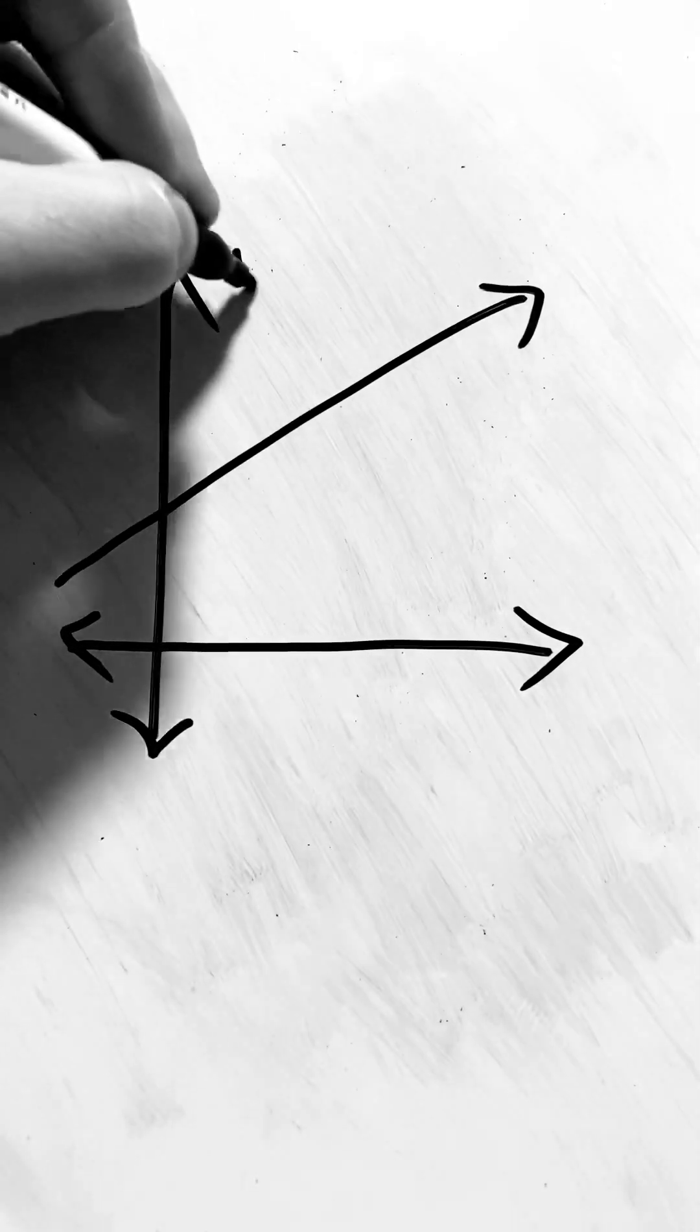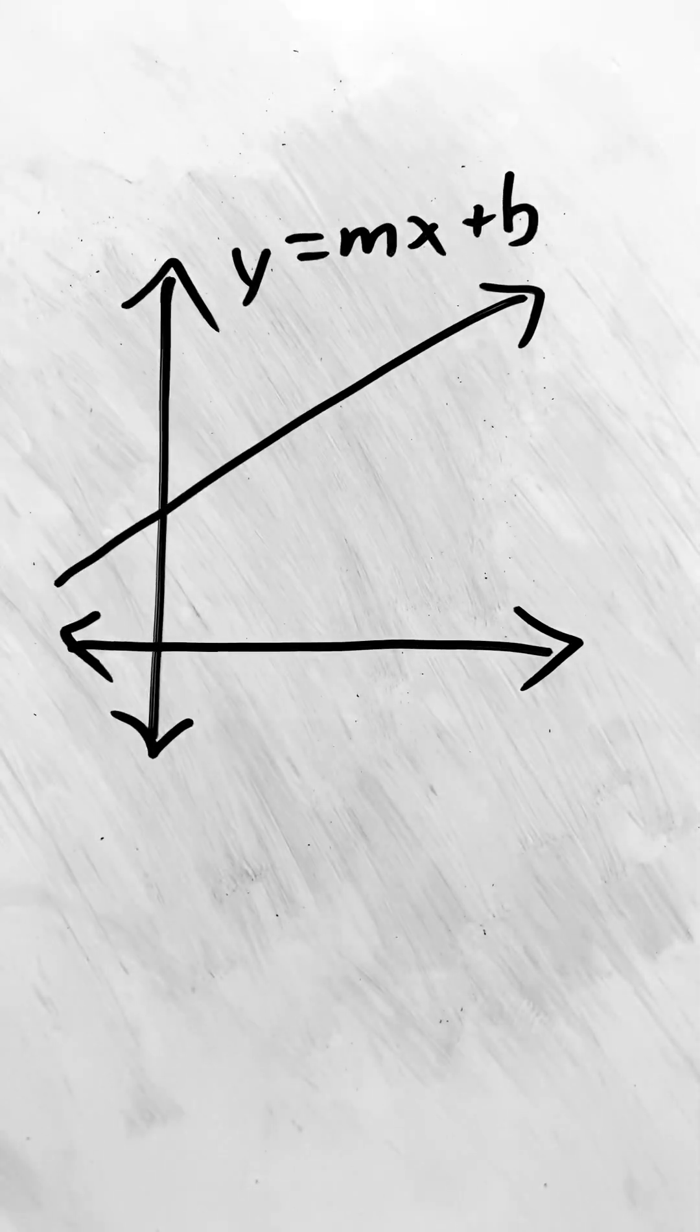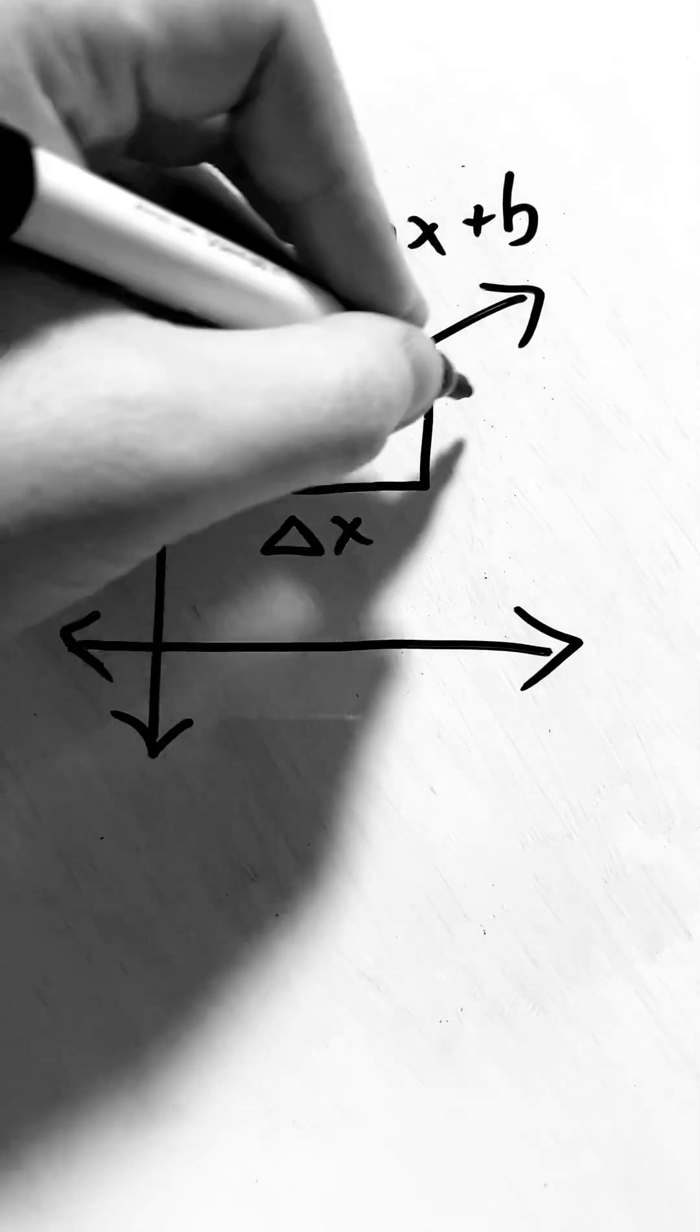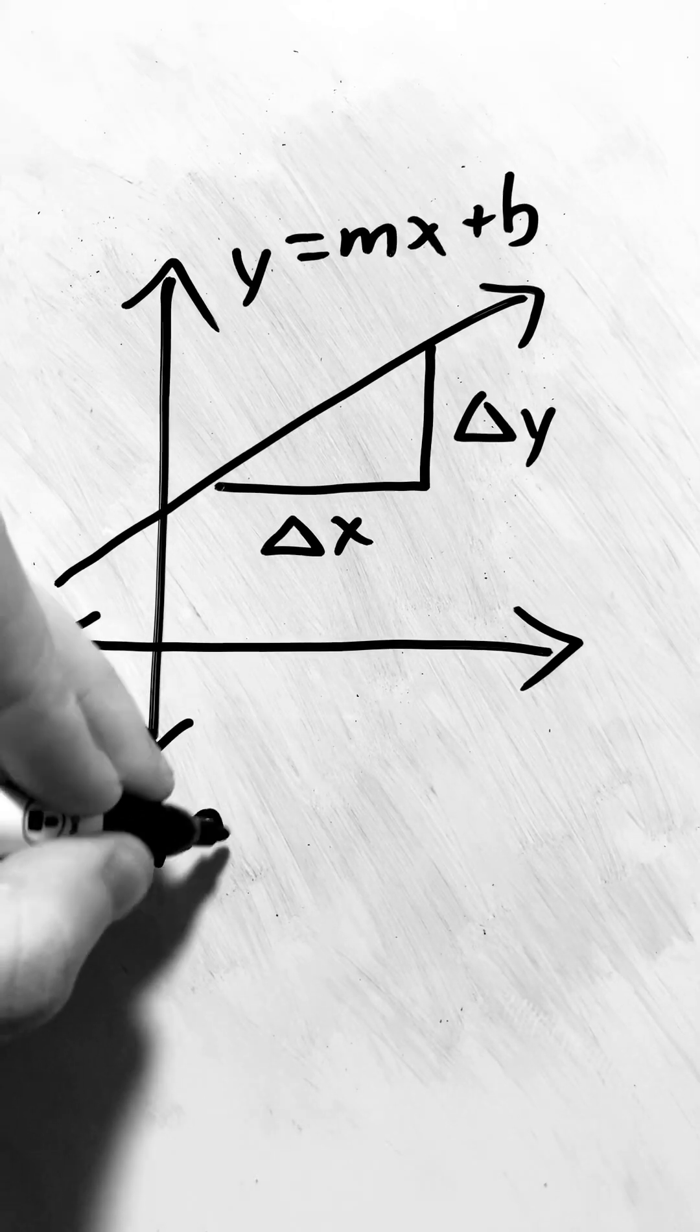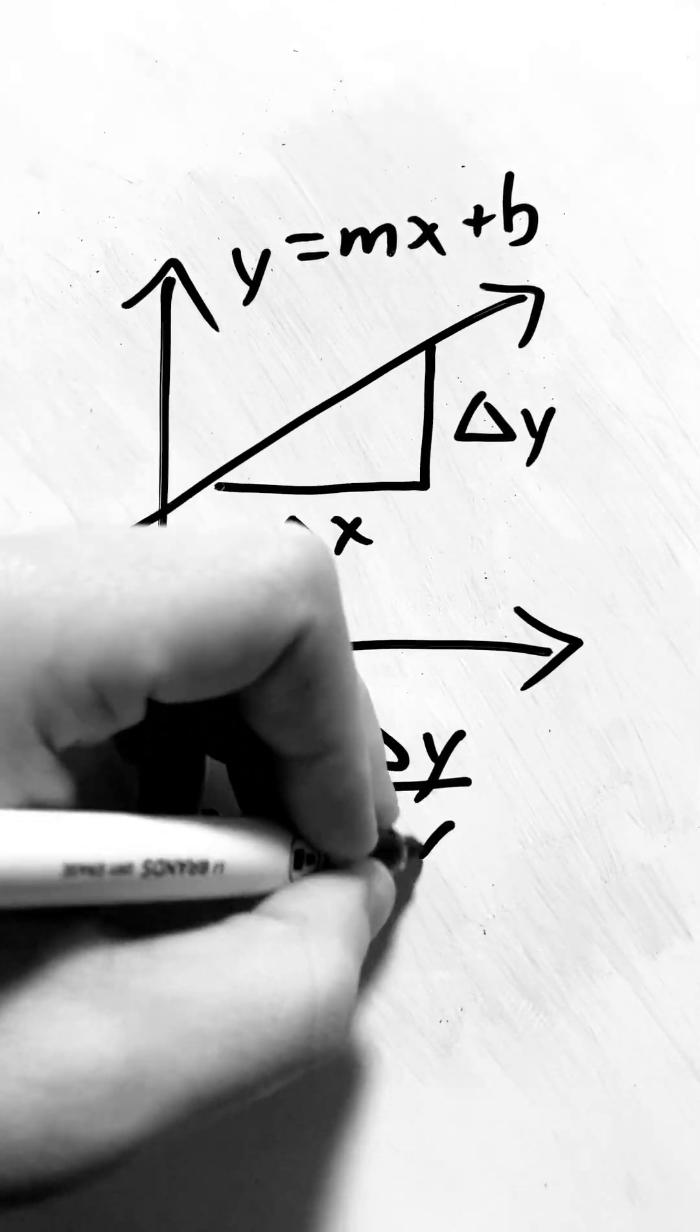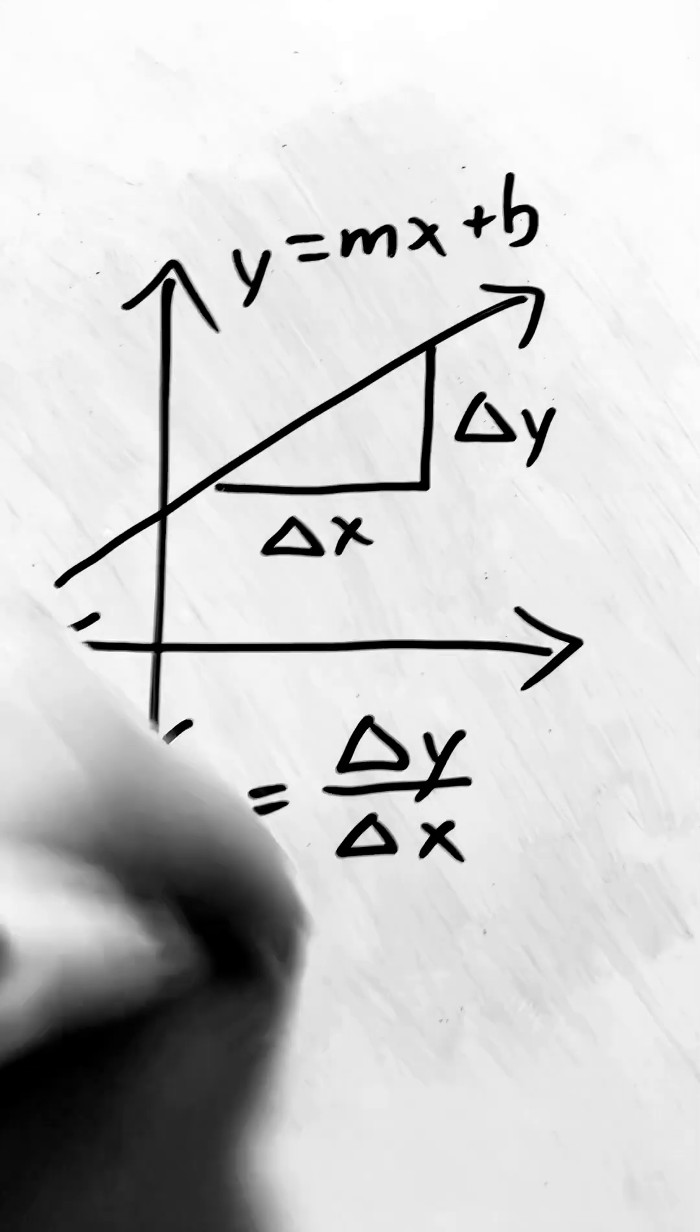From junior high math, we know that the equation for a line is y equals mx plus b, where m is the slope. We use rise over run, saying m equals delta y over delta x. This is fine for finding the slope of a straight line, but this technique breaks down easily under more complicated situations.